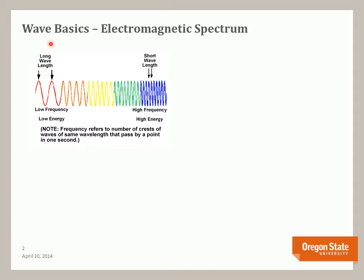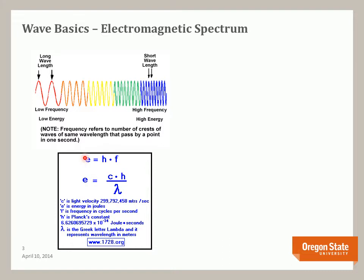So long wavelength radiation have lower energy, short have higher energy. So energy, which is measured in joules in this case, equals a constant, Planck's constant, times the frequency. Now the frequency is also equal to the velocity divided by the wavelength.